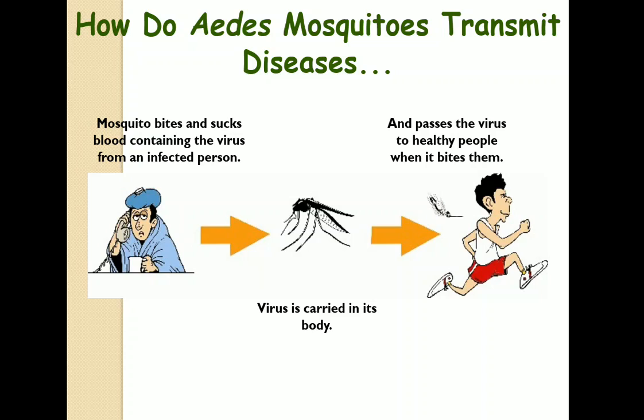The mode of transmission of dengue virus: the virus spreads to other tissues as the mosquito bites and sucks blood containing the virus from an infected person. The virus is carried in the mosquito's body and is then passed to a healthy person when it bites them.